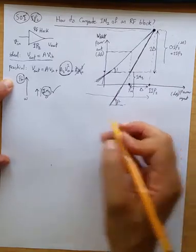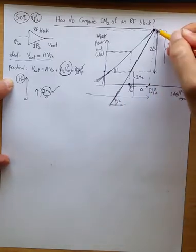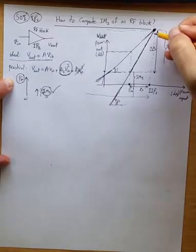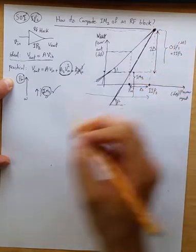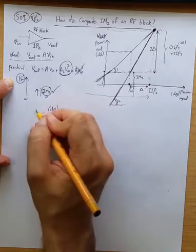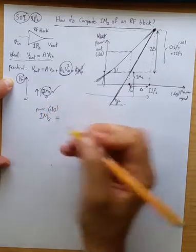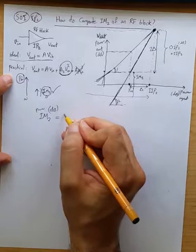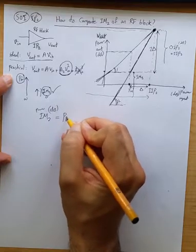So now we can say this point is IIP2 and then we go down by 2 delta we get to IM2. So we can say IM2 in dB scale power is P_in. Again we are talking input referred.